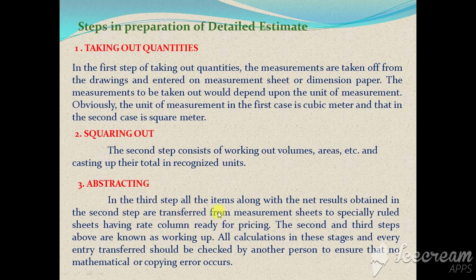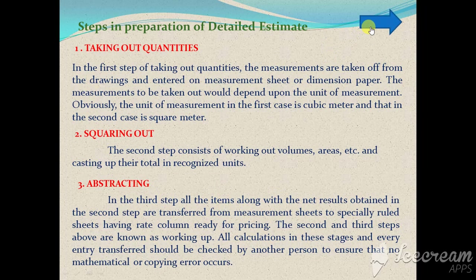By taking the rates for each item of work from the DSR — that is, the District Schedule of Rates — or from rate analysis, we get the abstract cost. We calculate the cost of each and every item of work, add different percentages to the rates, and find the final cost.